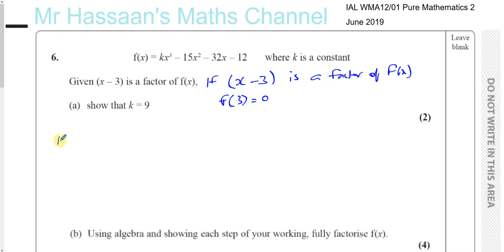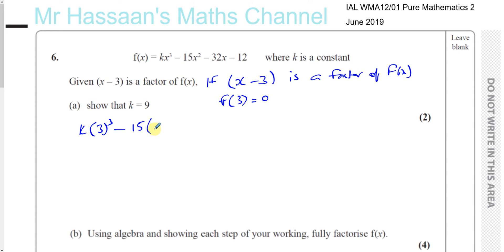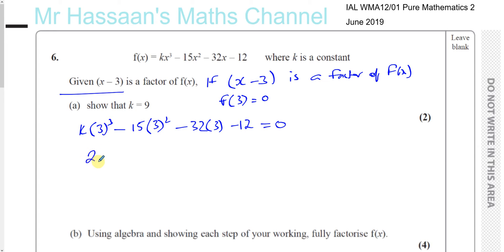So if f(3) equals 0, we can find what k is because it will be the only unknown. Let's substitute x = 3. We have k times 3 cubed minus 15 times 3 squared minus 32 times 3 minus 12, and we know that equals 0 since x minus 3 is a factor. So 3 cubed is 27, giving us 27k.